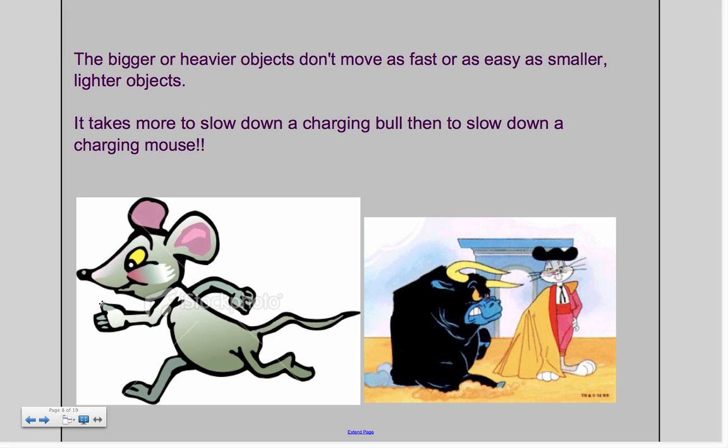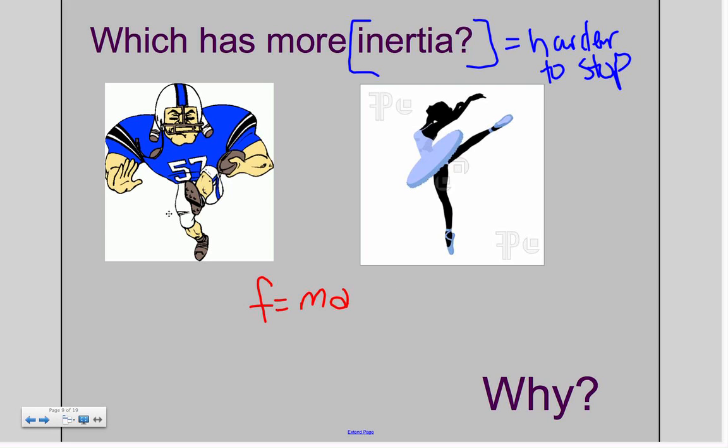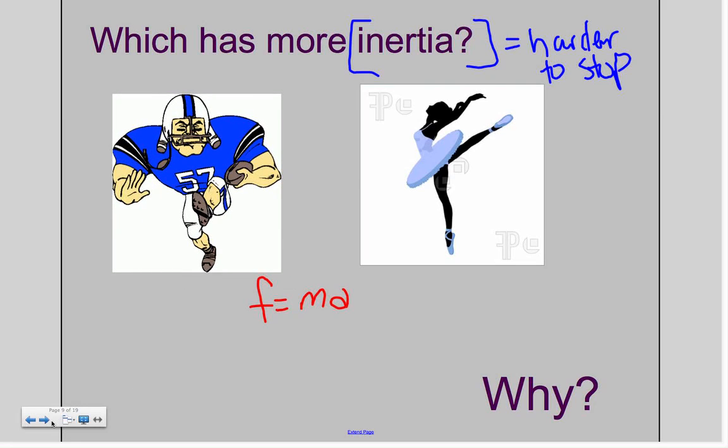So two objects, I've got a mouse and a bull. Which one of those do you think would cause Mr. Bugs Bunny here more harm and impact? So I hope that you would pick that the bull would have more damage to the Bugs Bunny versus the mouse because the bull is going to take more inertia to slow it down because its momentum is so much more greater. So which of these two, the football player or the ballerina, would have more inertia? Which one is harder to stop? And why? Hopefully you pick our friend here the football player because he has more mass.